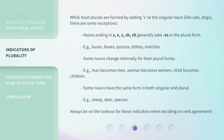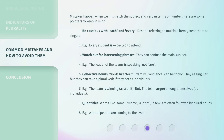Some nouns have the same form in both singular and plural — for example: sheep, deer, species. Always be on the lookout for these indicators when deciding on verb agreement. Mistakes happen when we mismatch the subject and verb in terms of number. Be cautious with 'each' and 'every' — despite referring to multiple items, treat them as singular. For example: 'every student is expected to attend.' Watch out for intervening phrases — they can confuse the main subject. For example: 'the leader of the teams is speaking,' not 'are.'